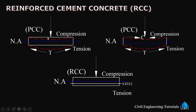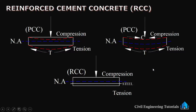This is the basic reason why we use RCC instead of PCC. When a structural element undergoes bending, it has two zones — compression zone and tension zone. Concrete handles compression stresses, but since it is weak in tension, we provide steel reinforcement in the tension zone to take care of the tensile stresses.